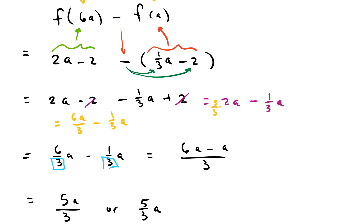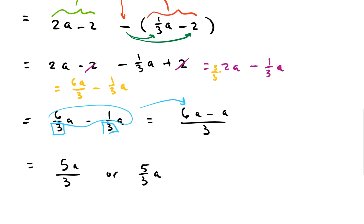So we have 6a minus a. If you have 6a and you take a away, you're left with our answer, which is 5a over 3. And if you want to put the a out in front, that's perfectly fine too—you could have 5/3 times a.